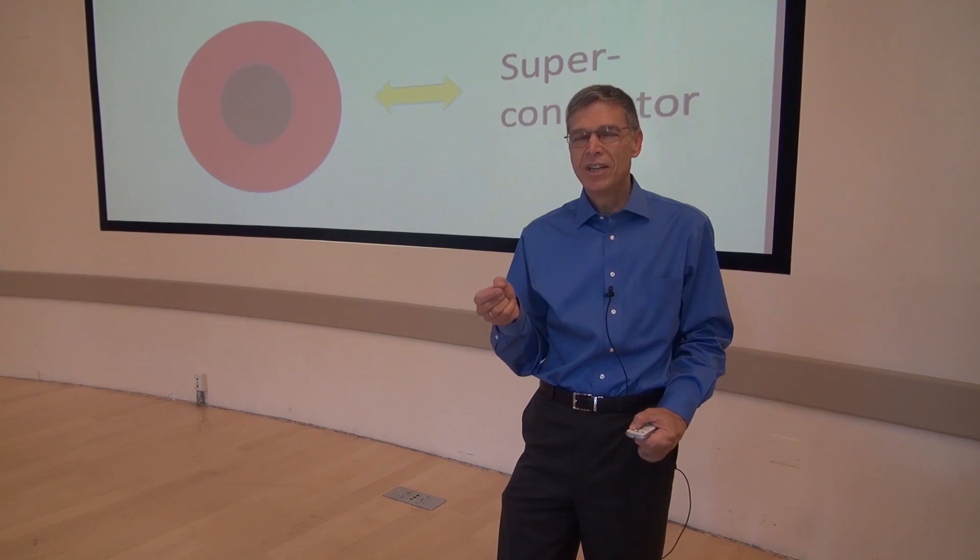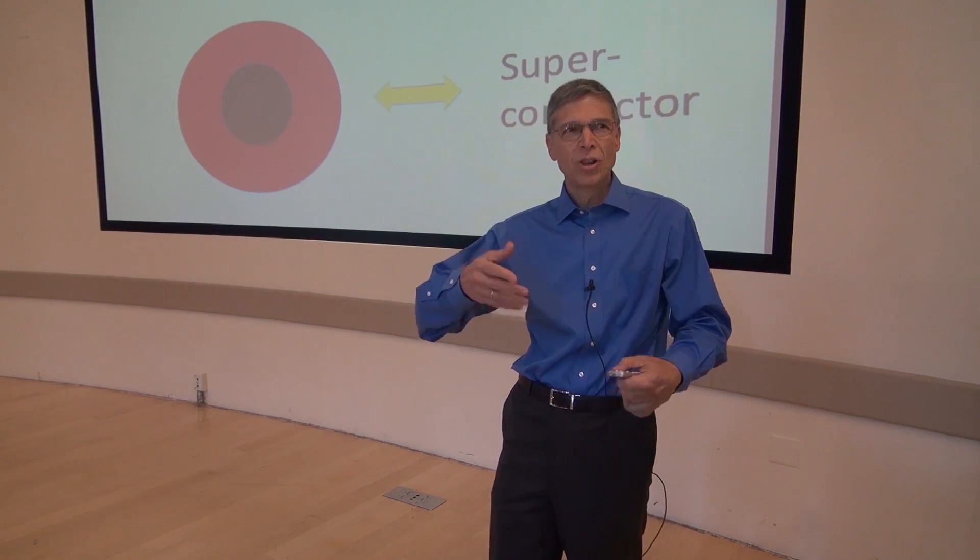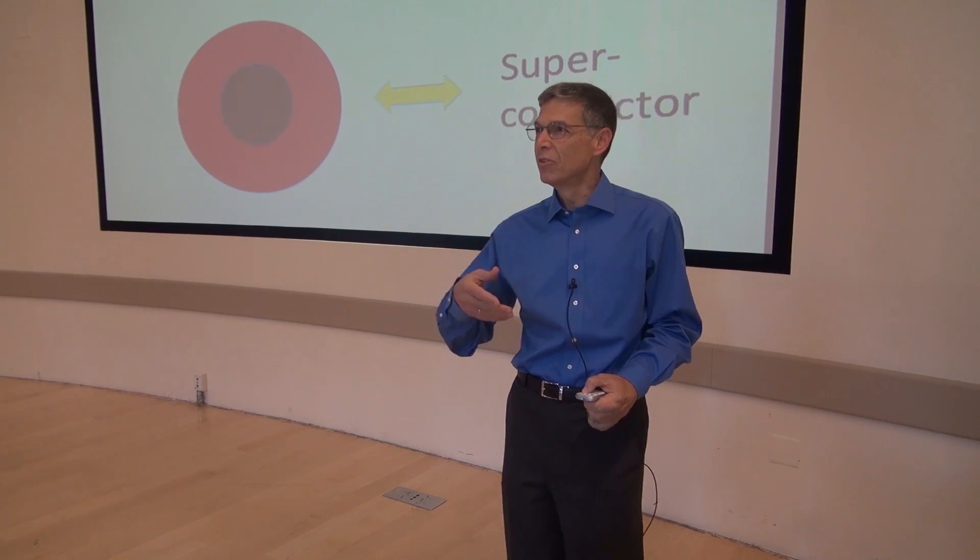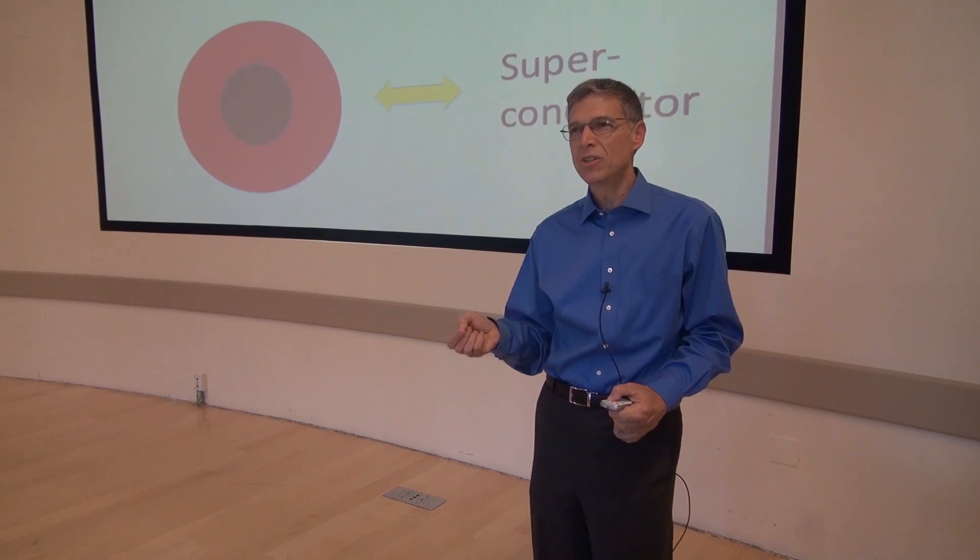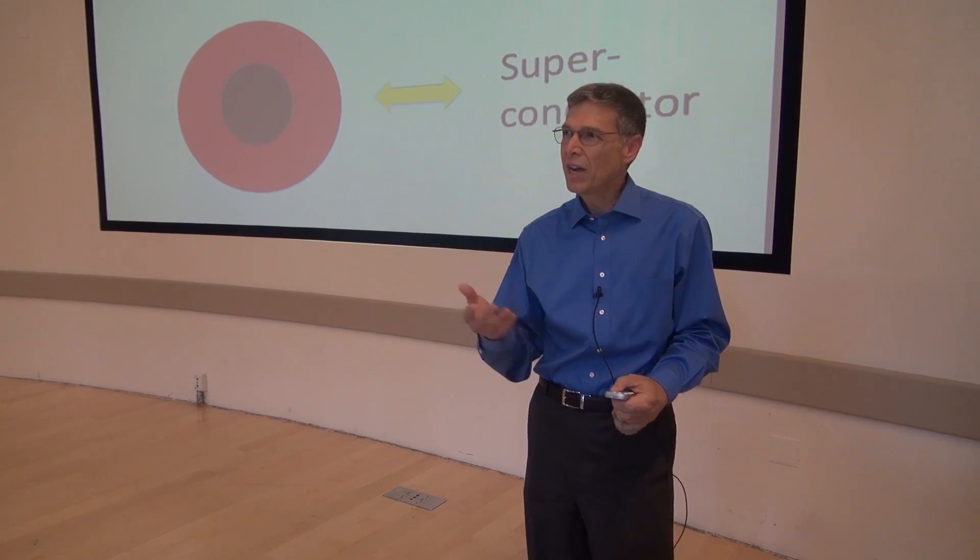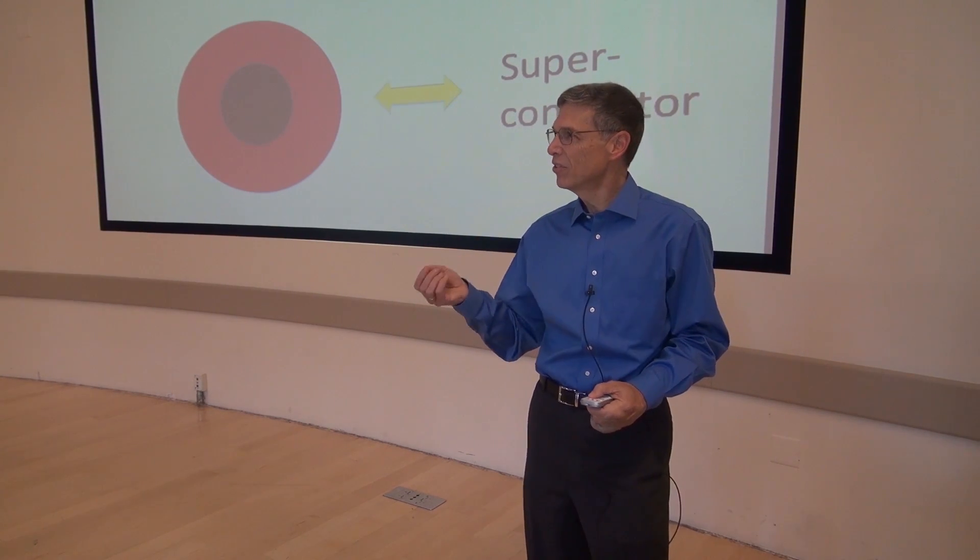There's a critical temperature and above this temperature, the black hole has no matter outside and the resistance is non-zero, but below this temperature, the black hole develops matter outside and the resistance goes to zero.